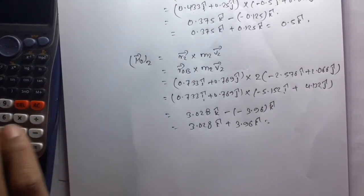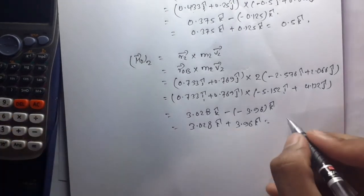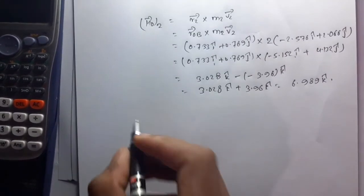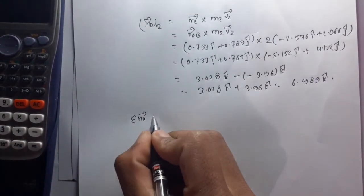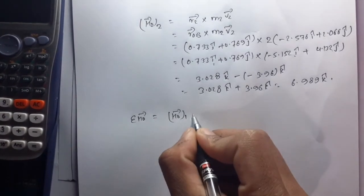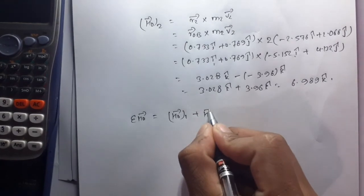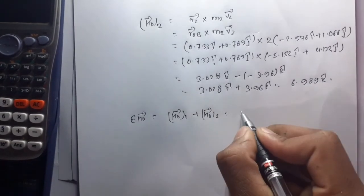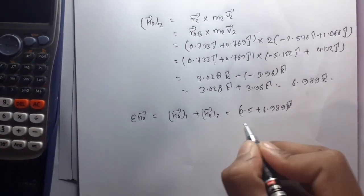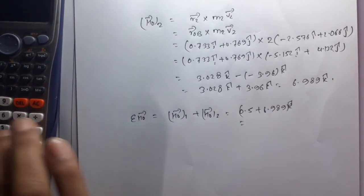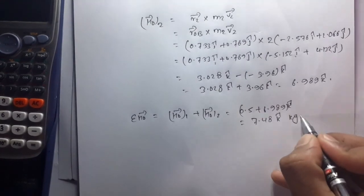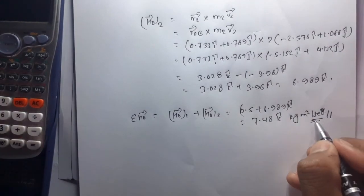The total angular momentum about point O is H_0 equals H_0_1 plus H_0_2 equals 0.5 k + 6.989 k equals 7.489 k kg·m²/s.